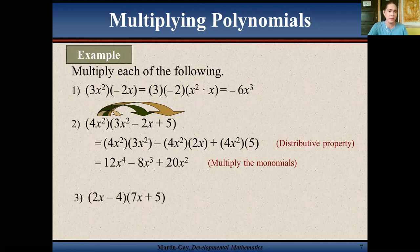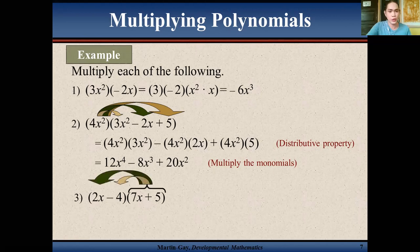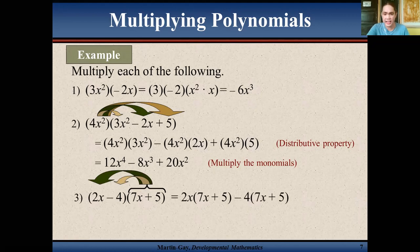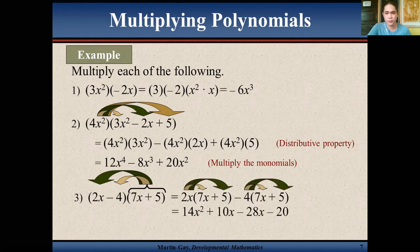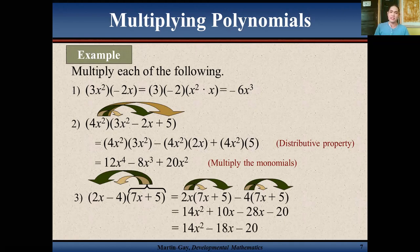When multiplying a binomial by a binomial, we still use the distributive property. Distribute 2x and multiply it to 7x plus 5, and distribute negative 4 to 7x plus 5. That gives you 14x² plus 10x minus 28x minus 20, which simplifies to 14x² minus 18x minus 20. This is our product.